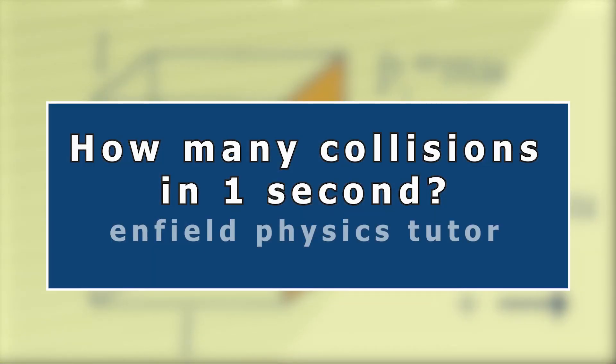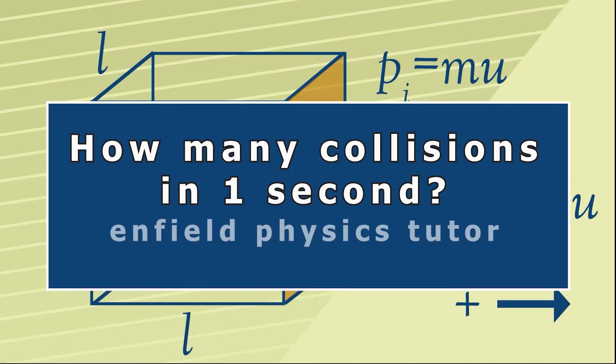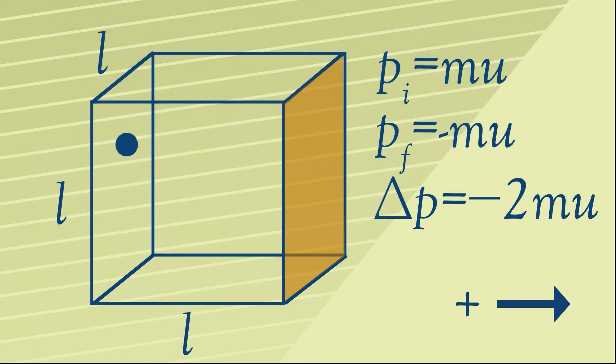Our next step is to try and work out how many times this particle will collide with the orange wall in one second. Why, you might ask? Well, hang on, that will become abundantly clear.